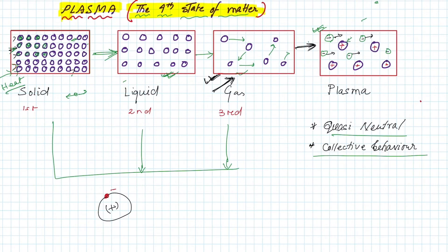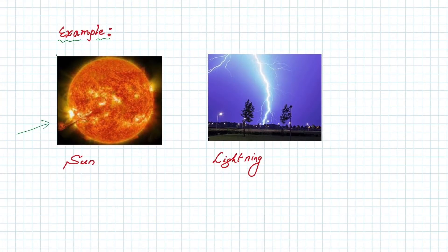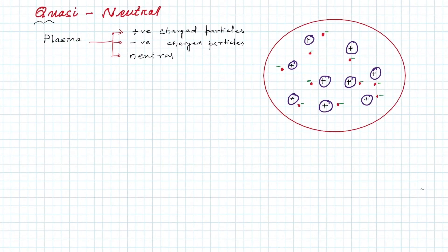At this stage, the gas molecules become ionized — electrons are free and no longer orbiting around the nucleus. This state is plasma. To be a plasma, it must satisfy two conditions: quasi-neutral and collective behavior. Examples of plasma include the sun and lightning.